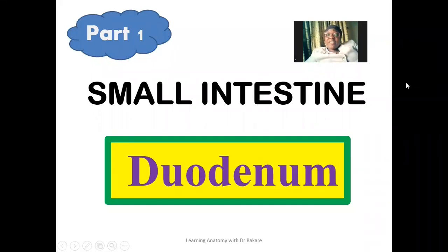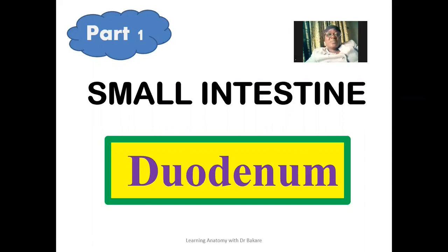Welcome again, and if you are visiting this channel for the first time, you are highly welcome. Let's look at the anatomy of the duodenum. The duodenum is the first region of the small intestine, followed by the jejunum and also the ileum. This is the first lecture series of the small intestine, so please look forward to that of the jejunum and also the ileum. For the purpose of this lecture, we'll be limiting this to just the duodenum.